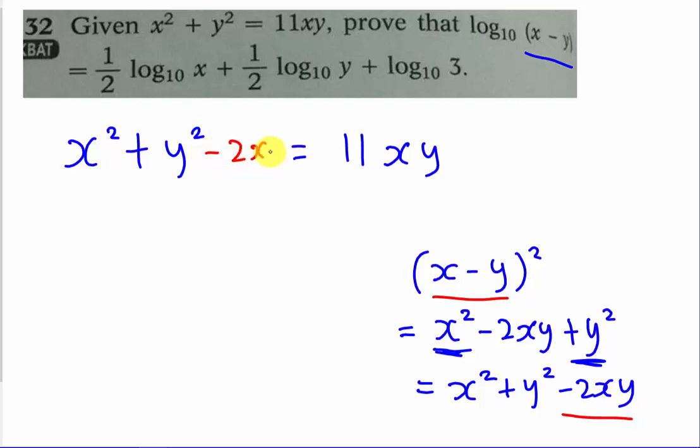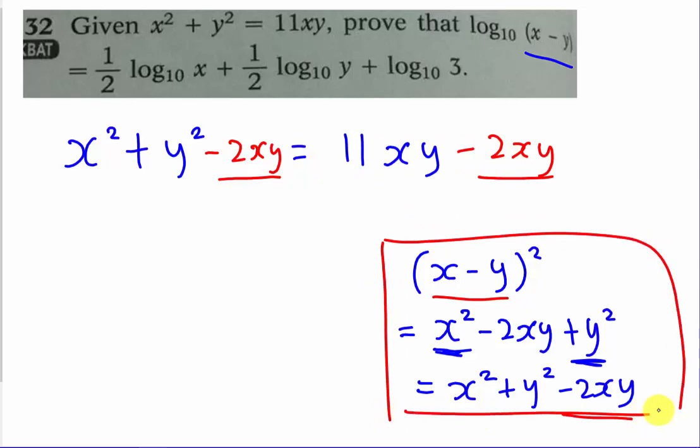So my first thought is in order to get x minus y squared, I need to minus 2xy from my left hand side. So I will minus 2xy here, and at the same time I will minus 2xy on my right hand side. I added it myself because I want to get x minus y squared.